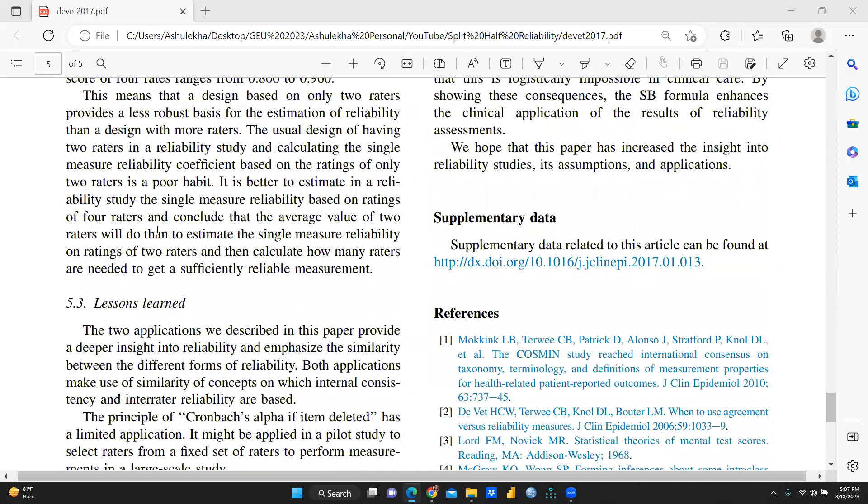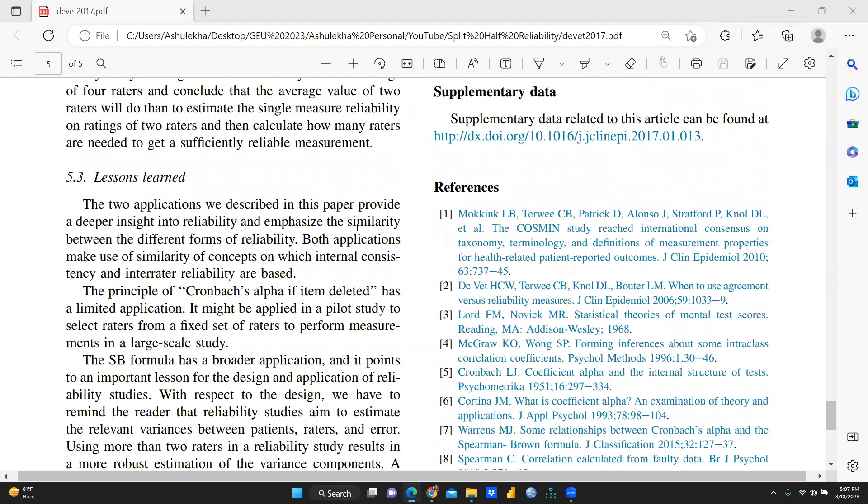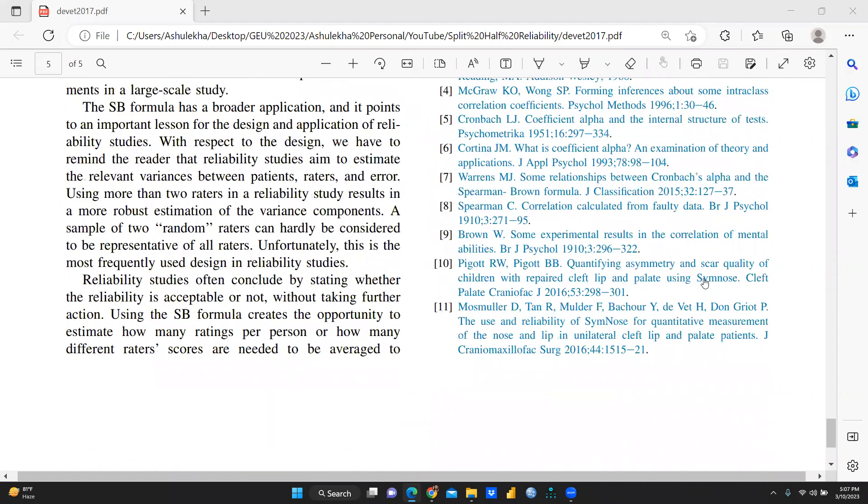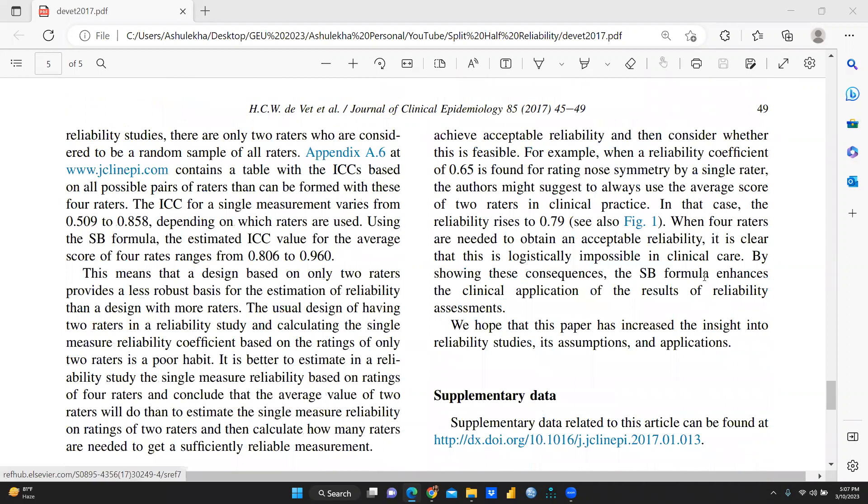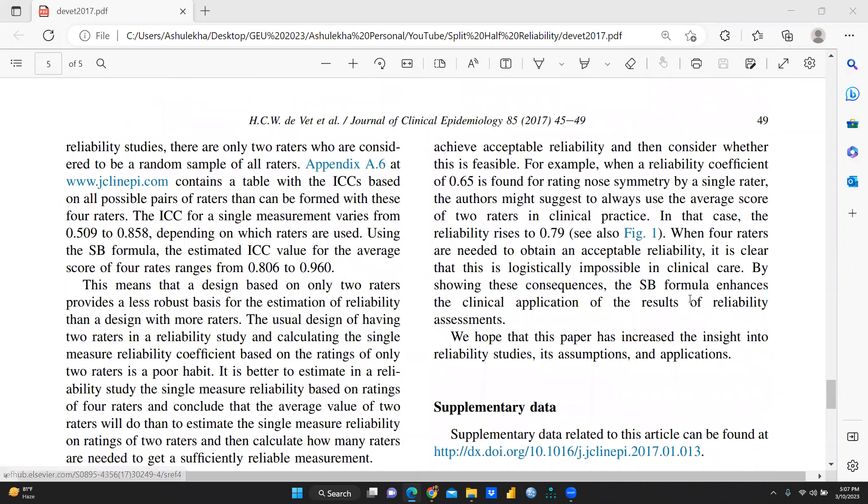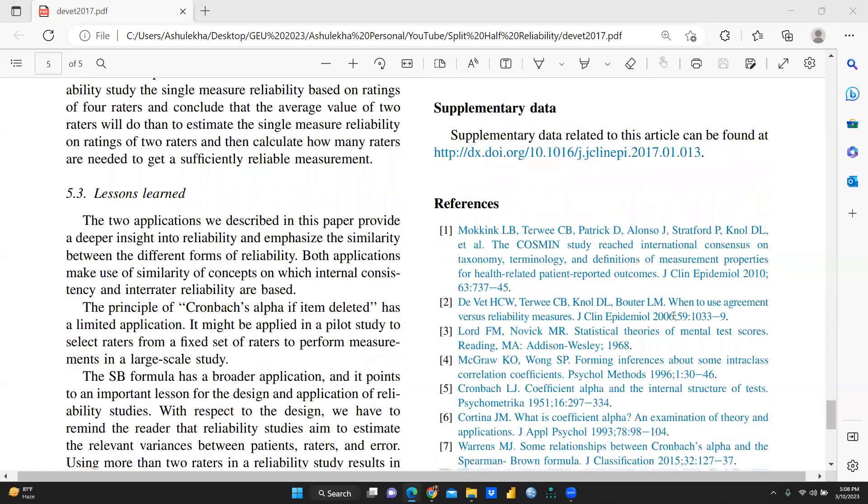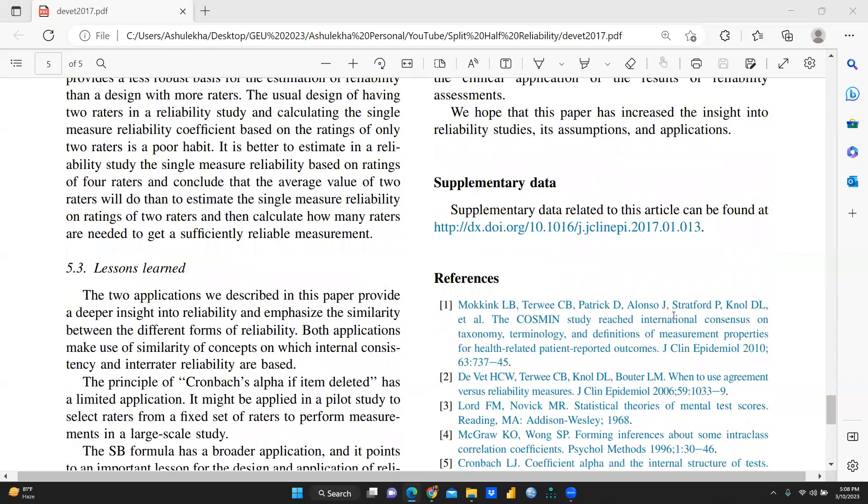And further, here are the lessons learned. You can see here, this is the proper they had given. What is when we are using four raters, those are needed to obtain an acceptable reliability. This cleared that. This is logically impossible in clinical care by showing these consequences. The SB formula enhances the clinical applications of the results of reliability assets. And you can see here, these are the references.